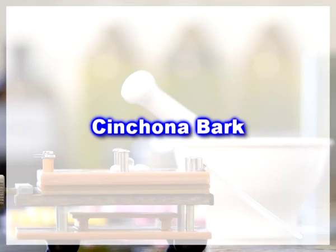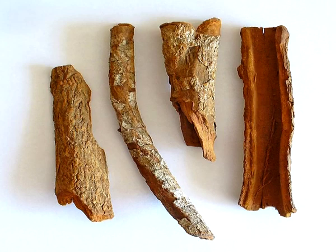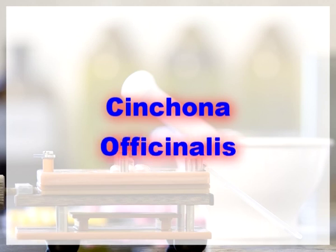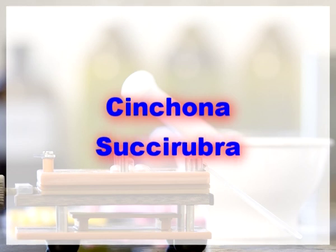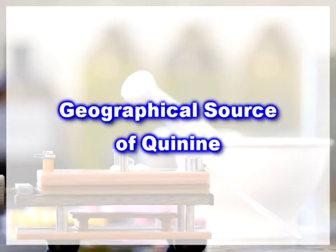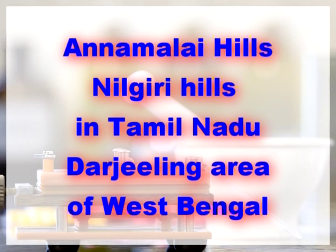Plant source of quinine: Quinine is obtained from the cinchona bark. The biological source of cinchona is the dried bark of cultivated trees of Cinchona calisaya, Cinchona ledgeriana, Cinchona officinalis, Cinchona succirubra, or hybrids of either of the last two species with either of the first two. Cinchona belongs to the family Rubiaceae. Geographical source: it is found in India, Bolivia, Colombia, Ecuador, Peru, Tanzania, Guatemala, Indonesia and Sri Lanka. In India, it is found in the Anamalai Hills and Nilgiri Hills in Tamil Nadu, and in the Darjeeling areas of West Bengal.